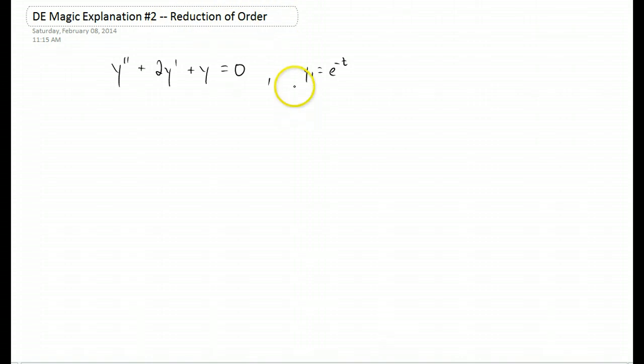The method of reduction of order says that if you have one solution to a differential equation, you can guess a second solution to a differential equation by taking the first one and just multiplying it by a function of the same variable.